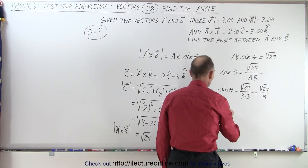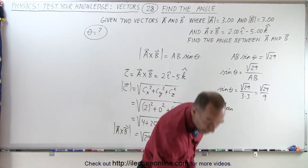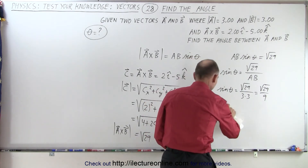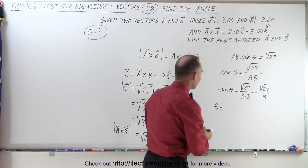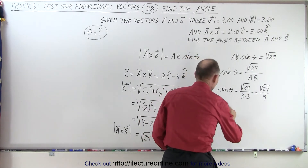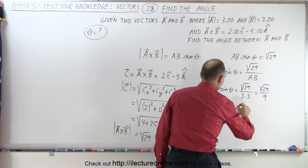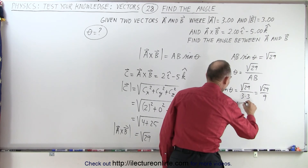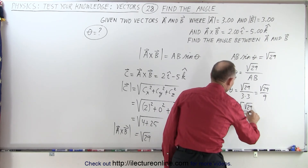So theta is therefore equal to the inverse — not tangent, but sine, wrong function — theta is therefore equal to the inverse sine of the square root of 29 divided by 9.